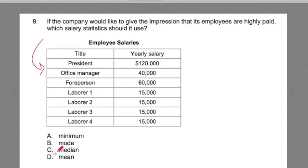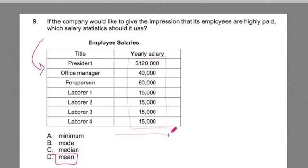The mean is a really helpful way of interpreting the average. The mean is the average — it's when you add up all the values, all the data points, and you divide by the number of data points in the set. In this case, it would be the sum of all these divided by 7 numbers, and this would give you the average salary.